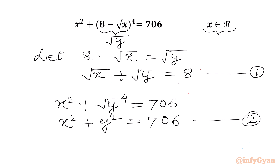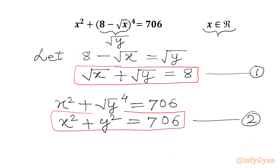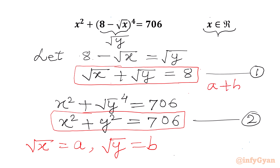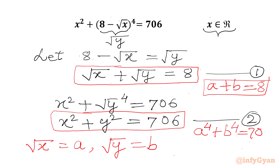Now we have two equations: square root x plus square root y equal to 8, and x square plus y square equal to 706. So we want to make our system of equations radical free. Then we can write root x equal to a and root y equal to b. So our first equation will become a plus b equal to 8, and the second equation will become a power 4 plus b power 4 equal to 706.